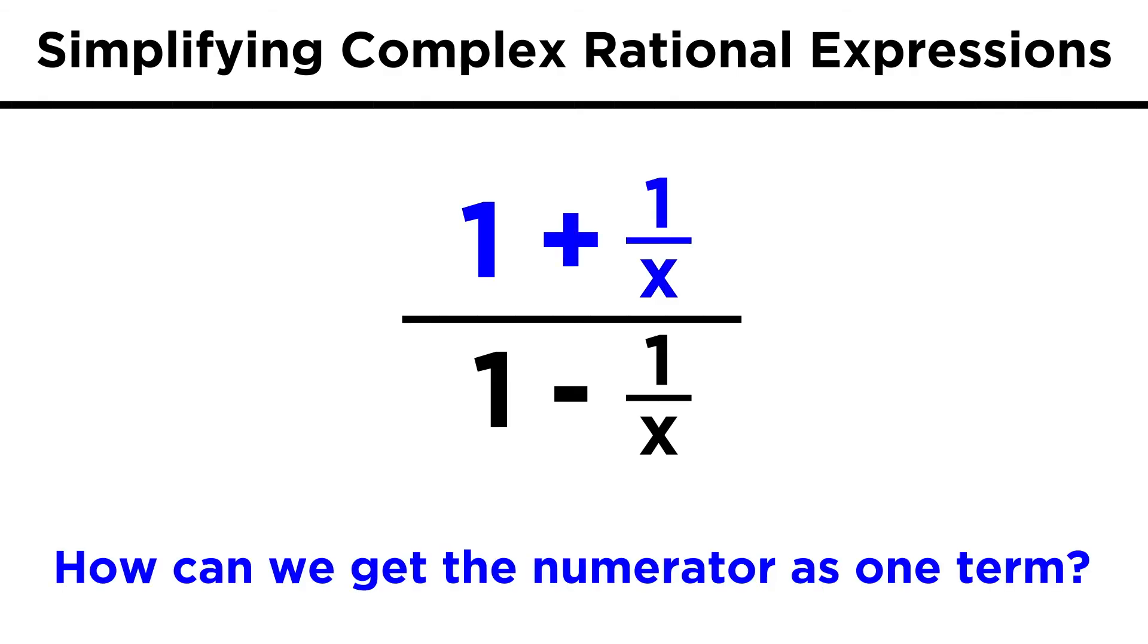Let's take the numerator first. How can we turn this into one term? Well let's express one as one over one. Now we have two fractions to add if we can get a common denominator. That will be easy, just turn one over one into x over x. Now we can add them and get x plus one over x.